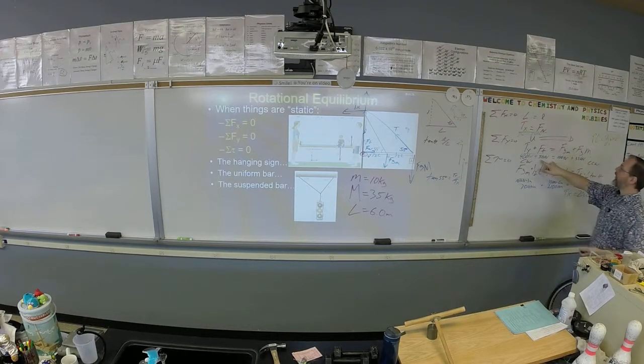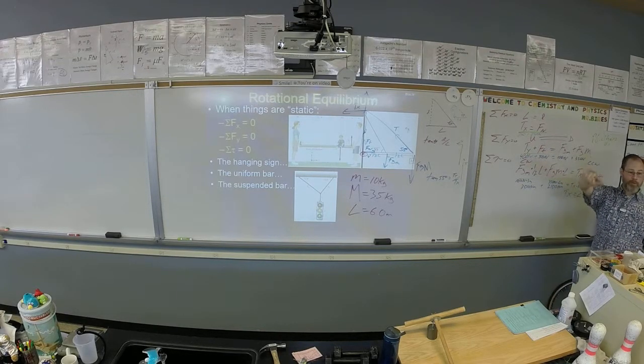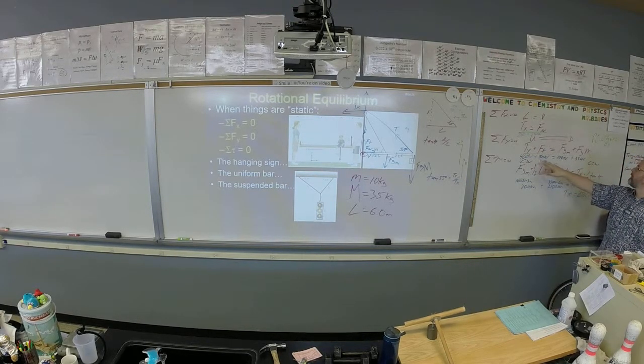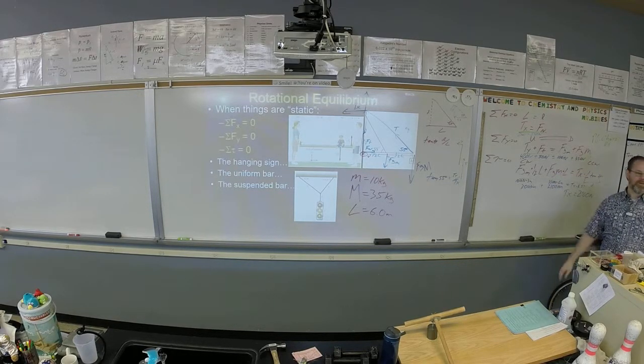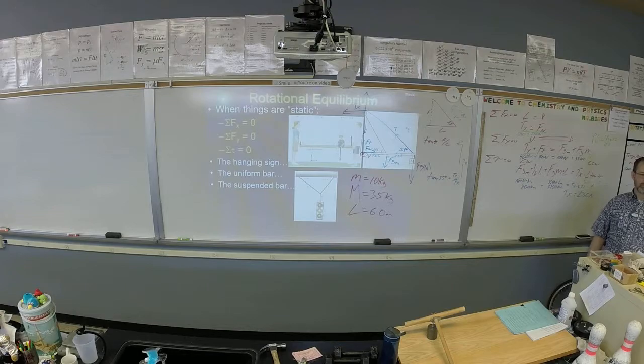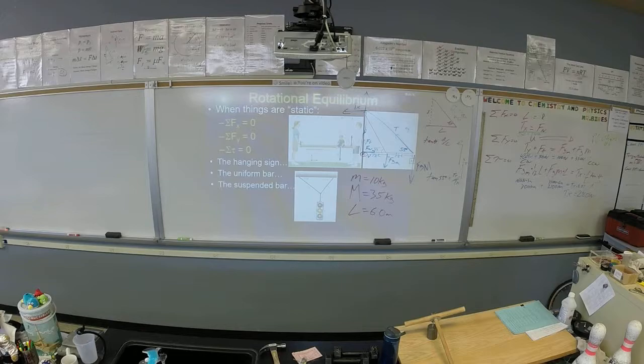Now we have Tx, we have Fn, and from Tx we can find T. So if Tx is that direction and Ty is that direction and your angle is 55, the tangent of 55 degrees is going to be the opposite which is Ty over the adjacent which is Tx. So it's tangent 55 times 280, so 400. So Ty is 400 newtons and now we have FF. FF is 50. So FF is 50 newtons.